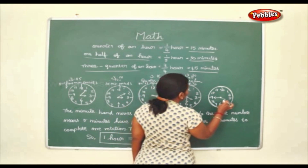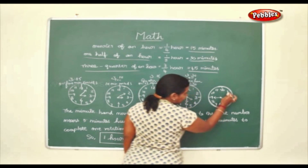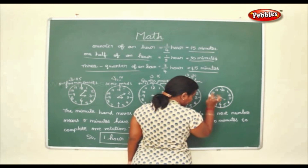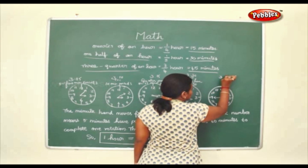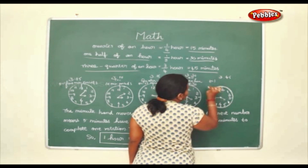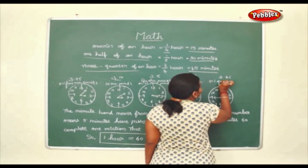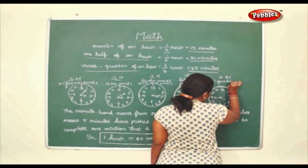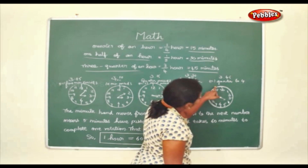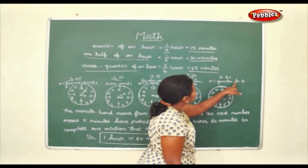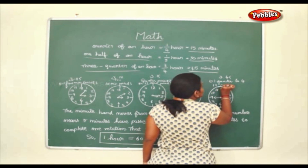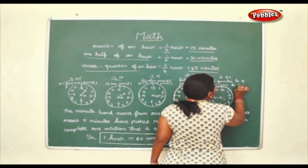Here, counting: 5, 10, 15, 20, 25, 30, 35, 40, 45 — so this is 3:45, or quarter to four. You just have 15 minutes left for 4 o'clock, so you write quarter to four, or 15 minutes to four.